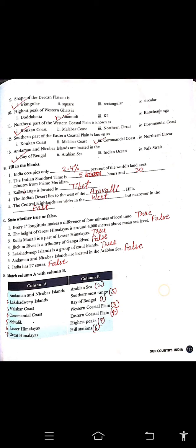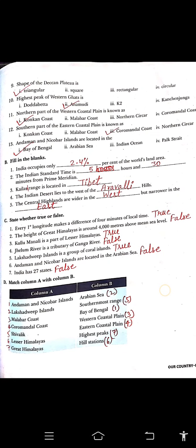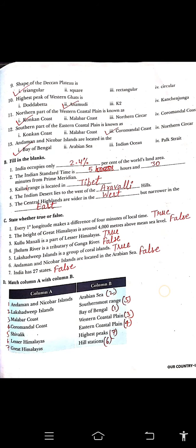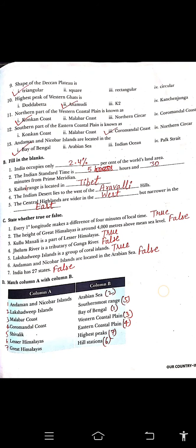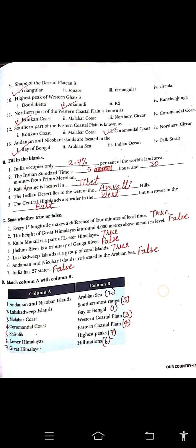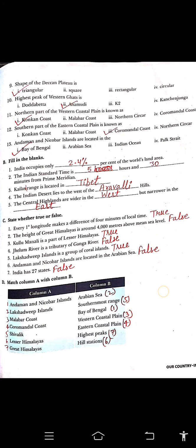For true or false: Every 1 degree of latitude makes a difference of 4 minutes of local time — True. The height of the Great Himalayas is around 4,000 meters above sea level — False; it is above 8,000 meters, and Mount Everest is 8,848 meters. Kullu Manali is a part of the Lesser Himalayas — True. The Jhelum River is a tributary of the Ganga River — False. Lakshadweep Island is a group of coral islands — True. Andaman and Nicobar Islands are located in the Arabian Sea — False; they are in the Bay of Bengal. India has 27 states — False.